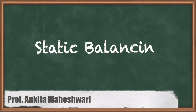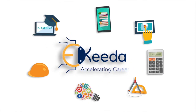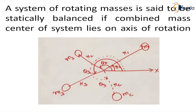Hello everyone. In this video we'll discuss static balancing. We know that in a system of rotating masses, unbalances are produced if the center of mass does not lie on the axis of rotation. So if by any means we ensure that the center of mass is lying on the axis of rotation, the system is said to be statically balanced.